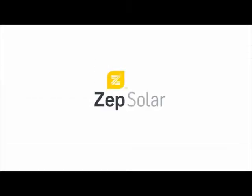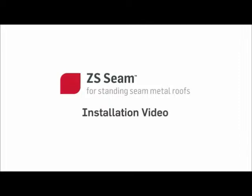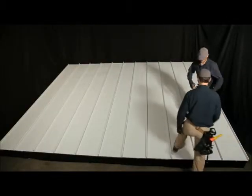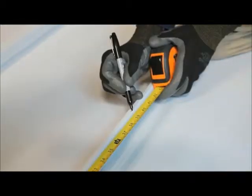This video demonstrates the installation of a Zepsolar ZS Seam Array on a standing seam metal roof. Using your Zepulator layout for reference, mark and chalk the locations of the seam mounts.